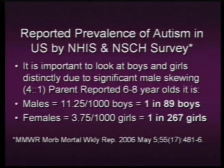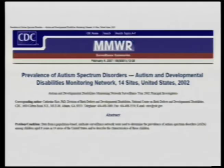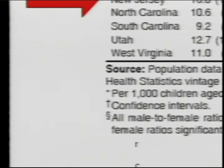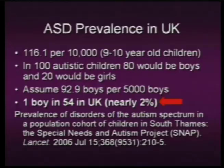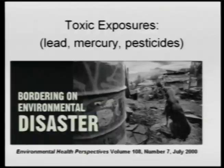The prevalence data: from 2006, it was 1 in 89 boys in the US — these are 6-to-8-year-old boys — and 1 in 267 girls. An updated MMWR study from February 2007, looking at 14 sites, found that in New Jersey — which has long been a waste ground for New York — the prevalence is 16.8 boys per 1,000, approximately 2% of boys. In England, a study published in the Lancet in July 2006 found 1 in 54 boys, also about 2%.